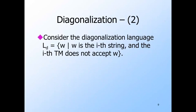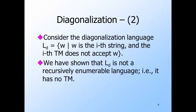Again, L sub D is the set of binary strings W such that W is the i-th string for some i, and the i-th Turing machine does not accept W. We just argued that L sub D is not a recursively enumerable language — that is, it has no Turing machine. We earlier proved that since there are more languages than integers, and since there are no more Turing machines than integers, there were languages with no Turing machine. But now we're much better off: we have a particular language, L sub D, and a description for this language, such that L sub D is one of the languages without a Turing machine.